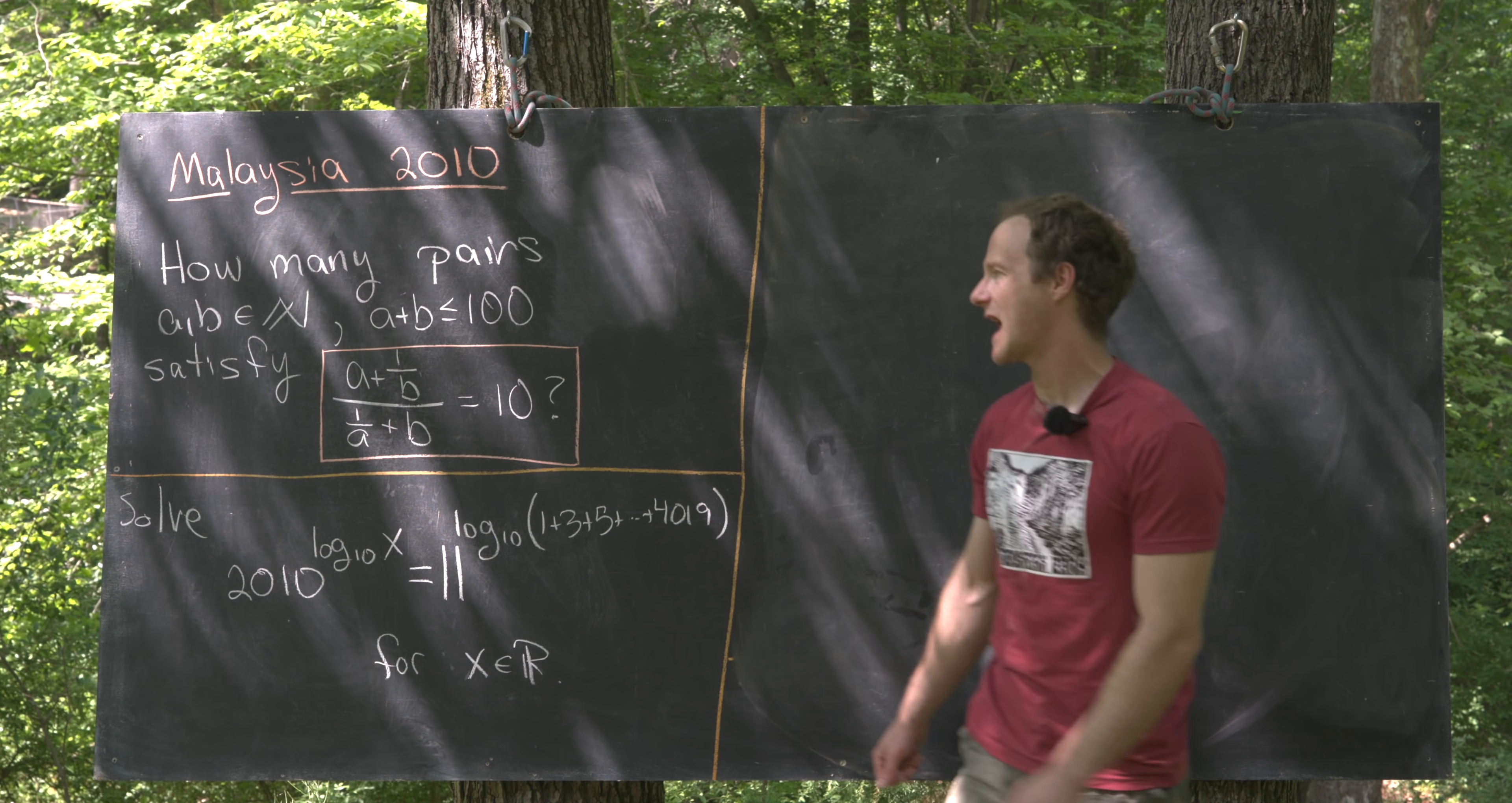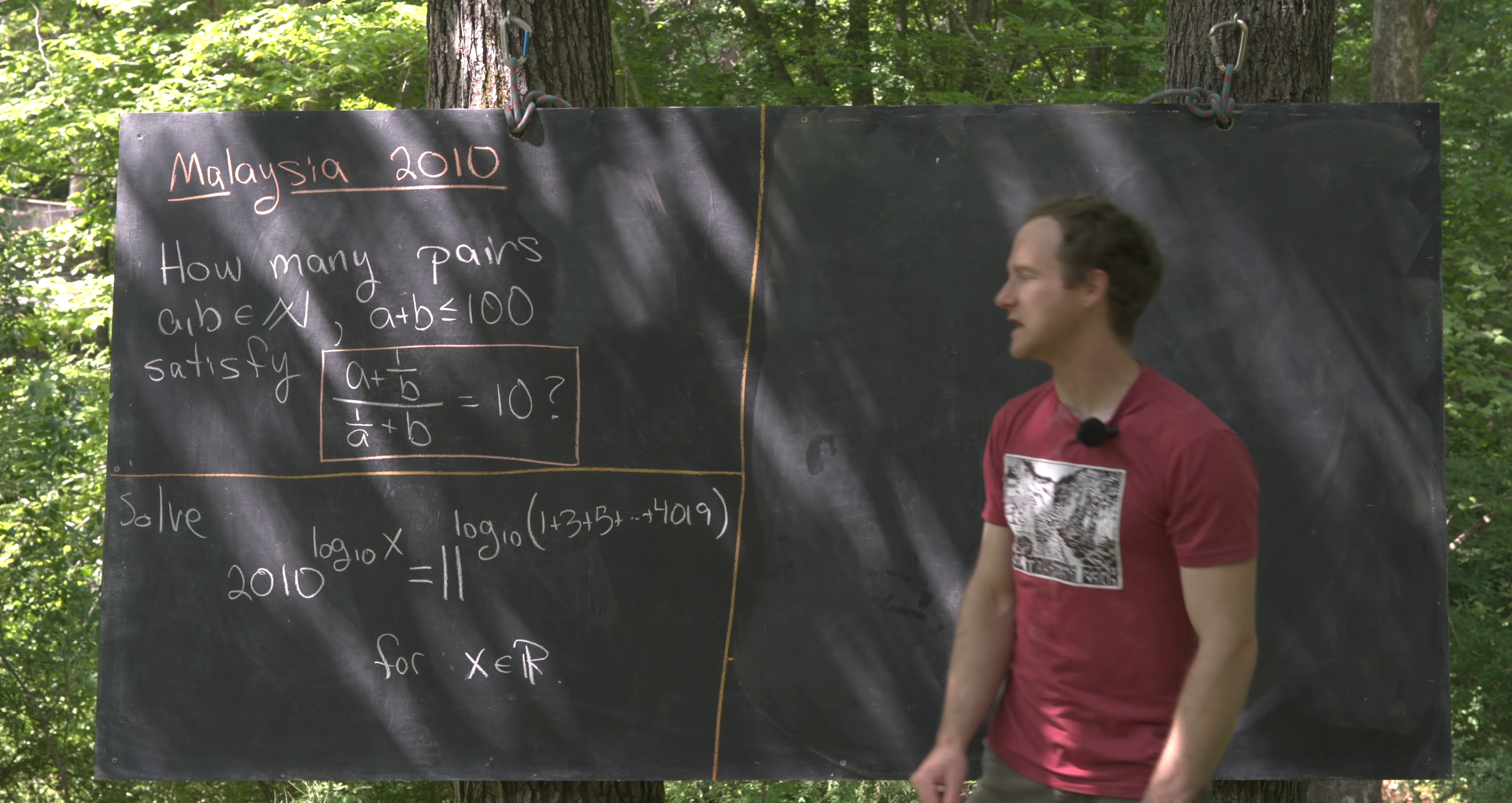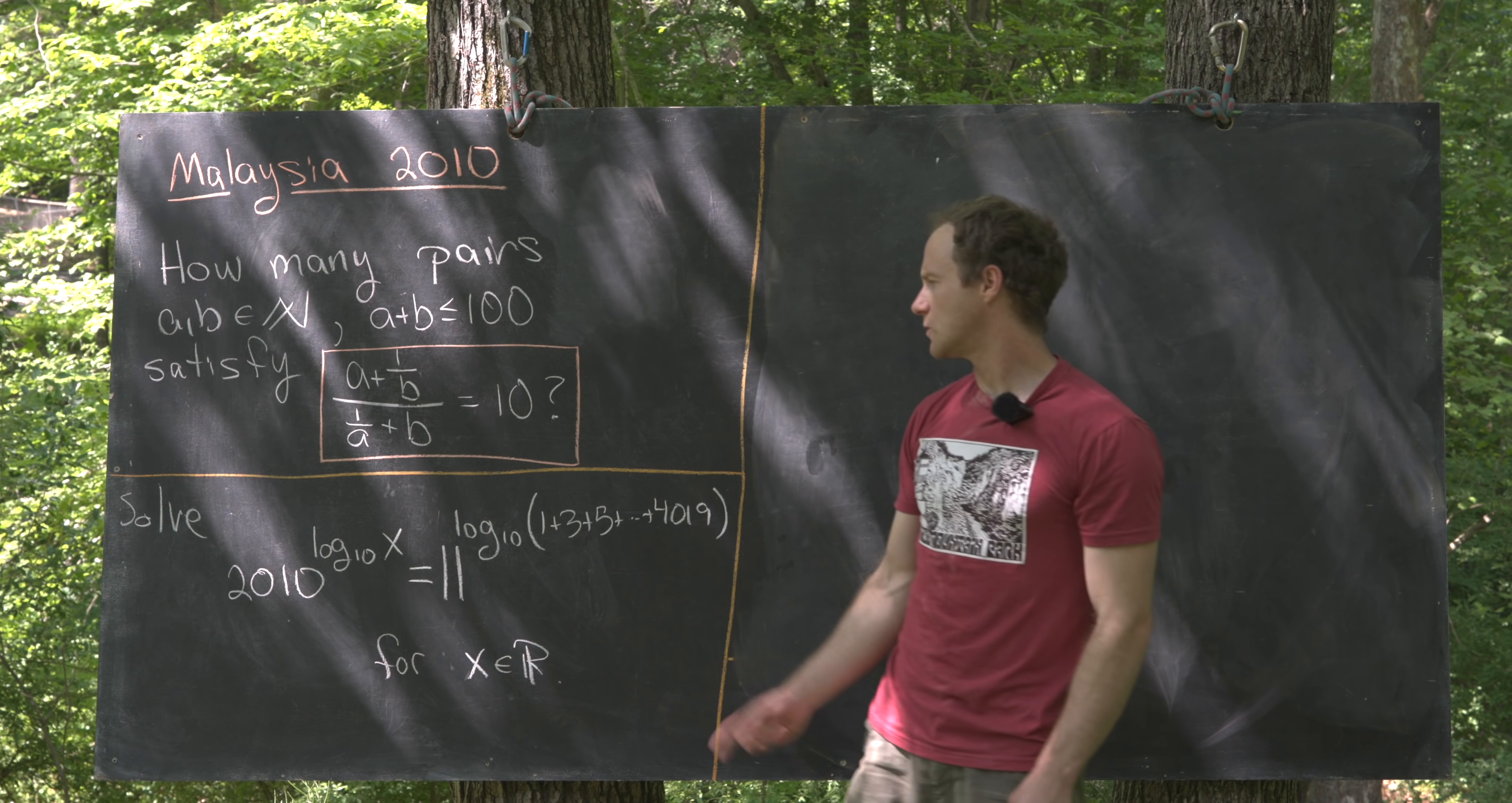We want to determine how many pairs of natural numbers, we'll call them A and B, satisfy the following two conditions. So A plus B is less than or equal to 100, and then A plus 1 over B over 1 over A plus B is equal to 10.